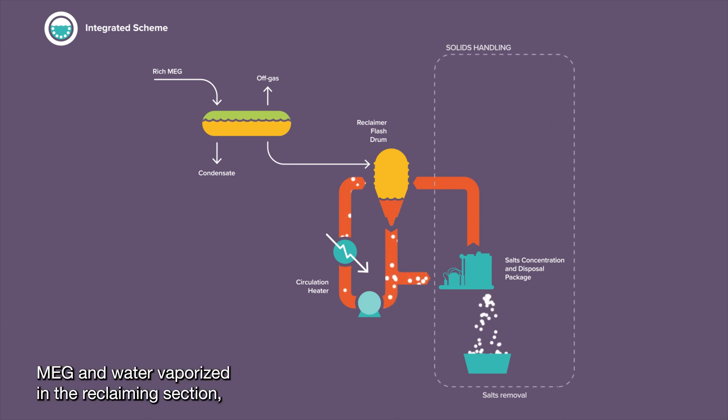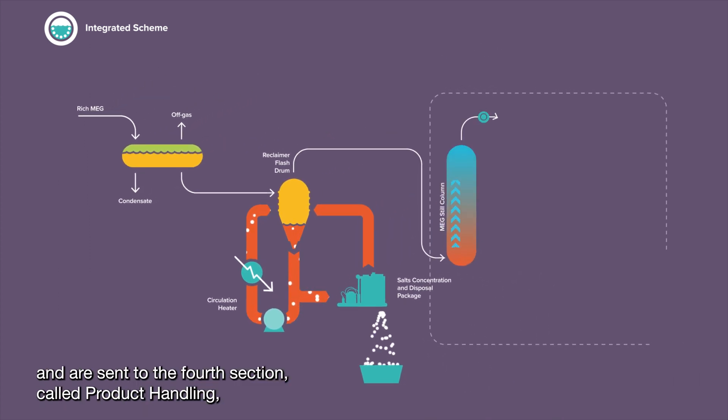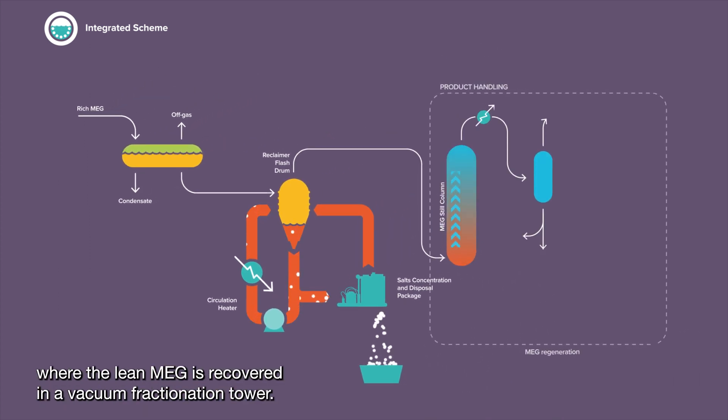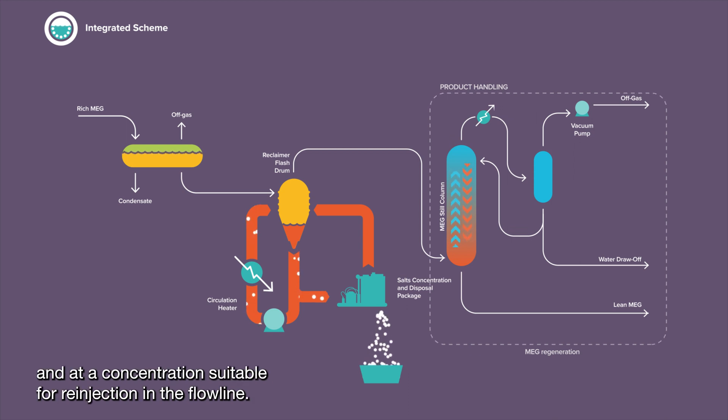MEG and water vaporized in the reclaiming section are free of salts and are sent to the fourth section, called product handling, where the lean MEG is recovered in a vacuum fractionation tower. At the outlet, lean MEG is free of salts and at a concentration suitable for reinjection in the flowline.